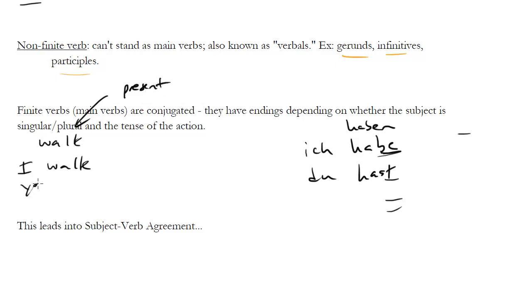So I walk, you walk, okay, no change. Let's do we walk, no change. They walk, no change. Okay, so far it seems like there's no ending change, but there's one ending change that's really important, and that's that third person singular, he, she, or it walks.